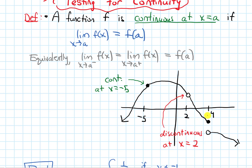What about at 4? At 4, the limit from the left and the limit from the right are definitely different. Because of that, this limit overall doesn't even exist. And if it doesn't exist, it can't be equal to the y value of our function at that point. So it's also going to be discontinuous at 4.